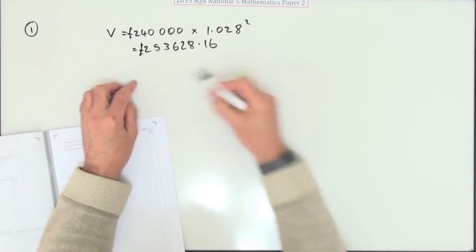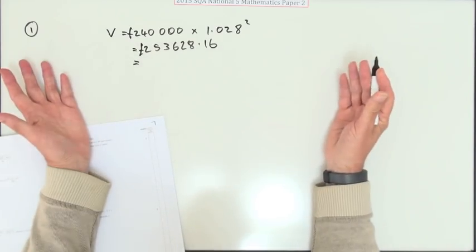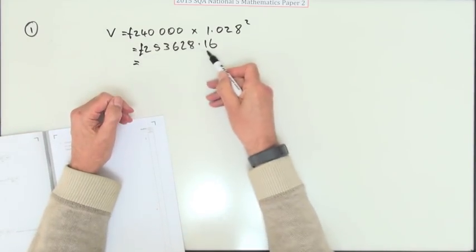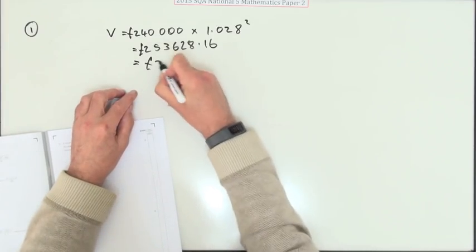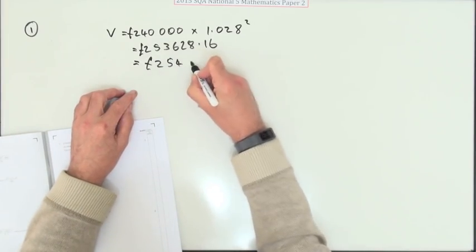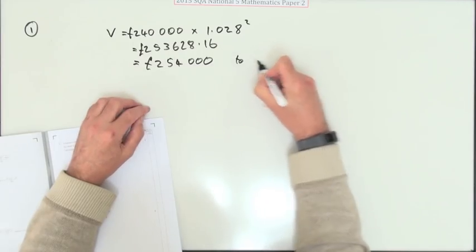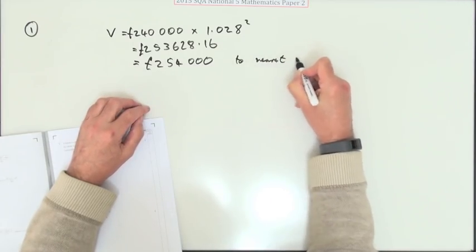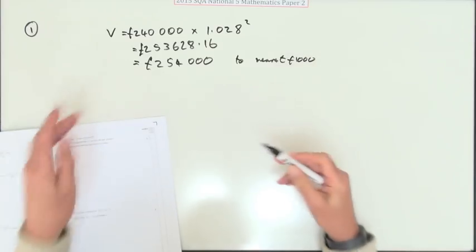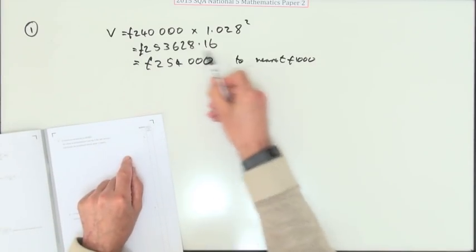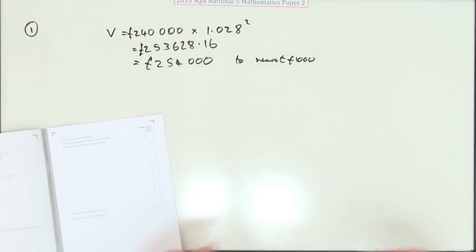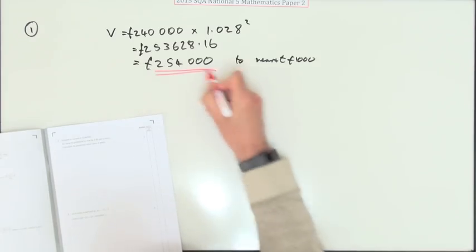But will you leave an answer like that for the three marks? It doesn't say round it off. So is this a value including the 16p, or will you just change that to 254,000 and say to the nearest thousand? It doesn't say anything, so you can just as well leave it like that. That seems to make more sense though.